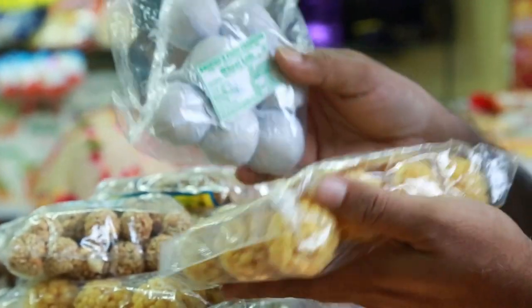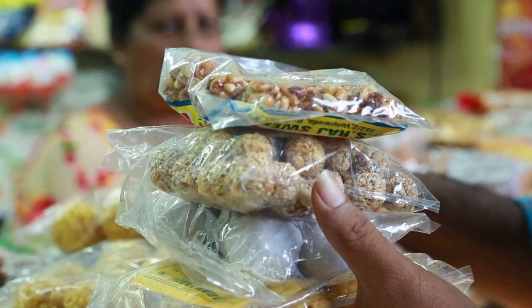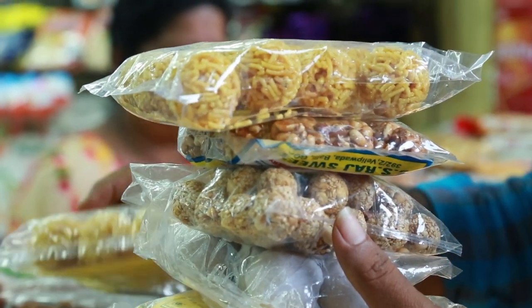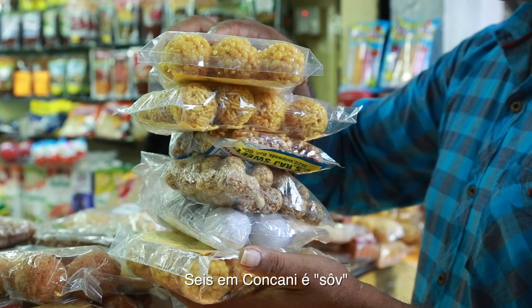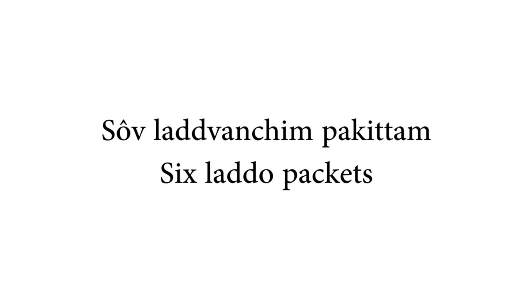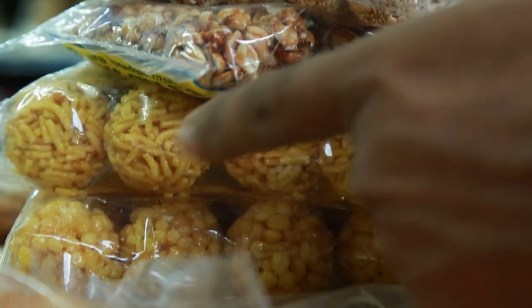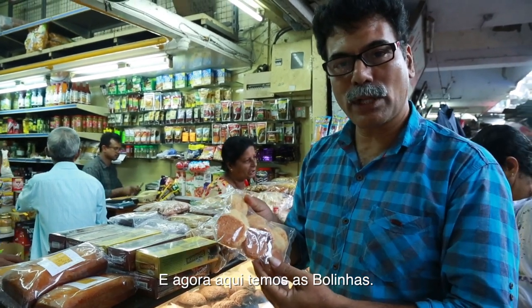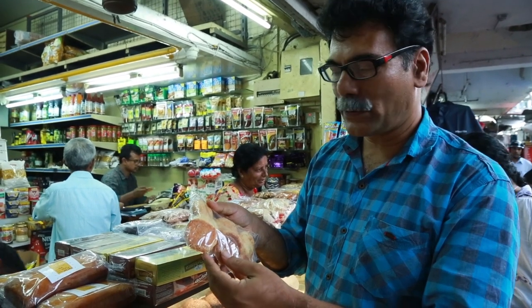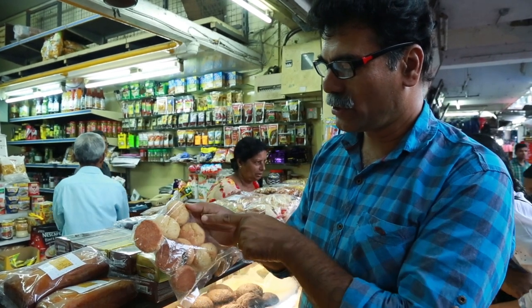Here we have different varieties of Ladus — Ek, Don, Tin, Chaar, Paans. And here we have the Goan Bolinya. So we would say Ek, Don, Tin, Chaar, Paans, So, Saat. Six is So and seven is Saat.